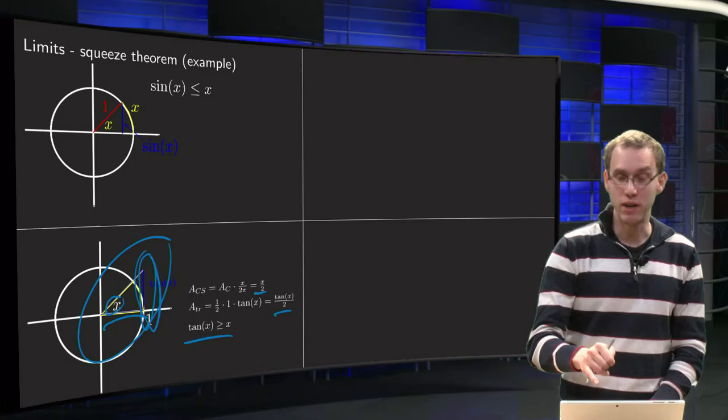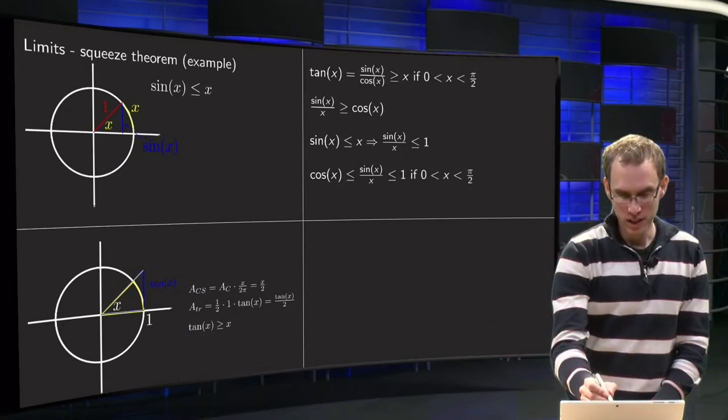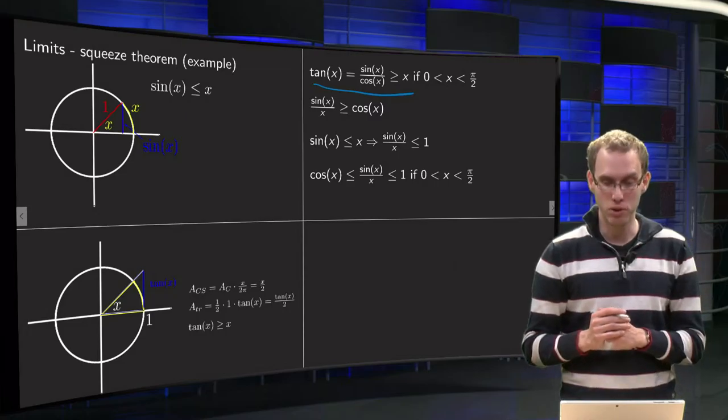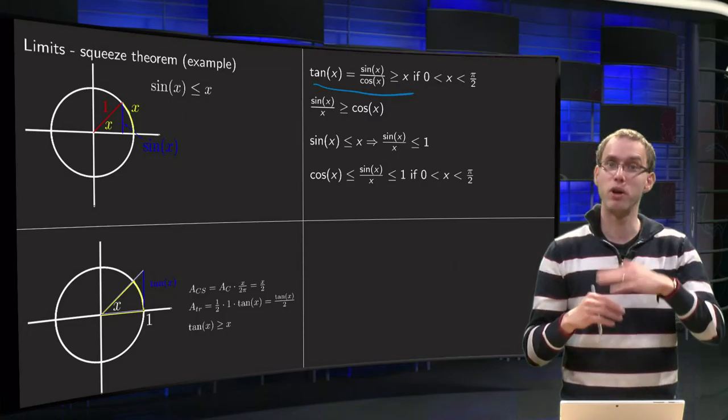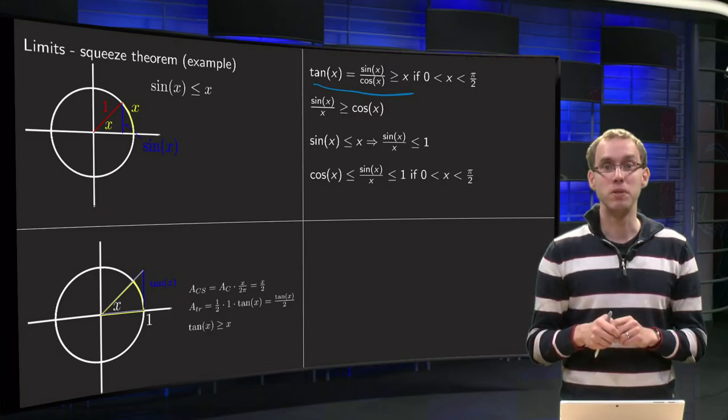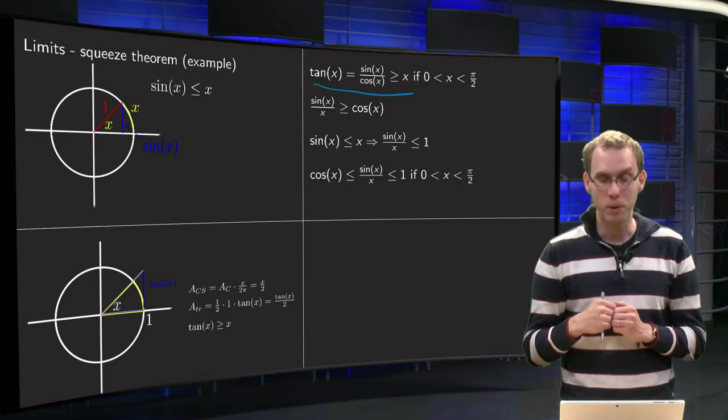So we need those two inequalities for our limit later on. So what do we know? Tangent of x equals sine of x over cosine of x is bigger or equal than 0. If x is between 0 and pi over 2, otherwise this geometric argument will not hold.